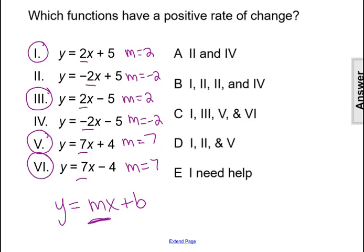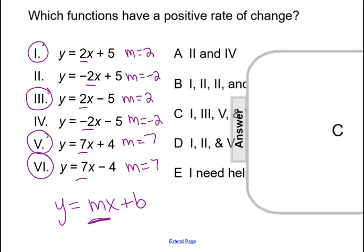So after identifying the positive slopes in functions 1, 3, 5, and 6, that means functions 1, 3, 5, and 6 have a positive rate of change, making our answer choice C.